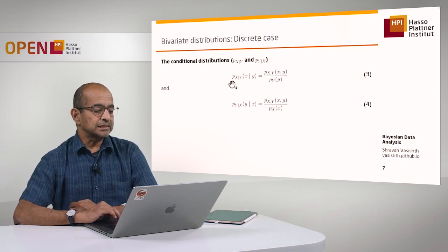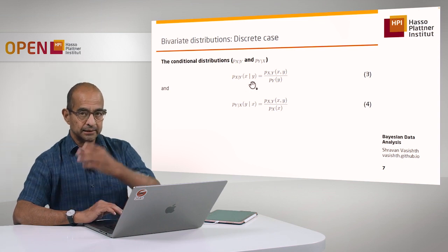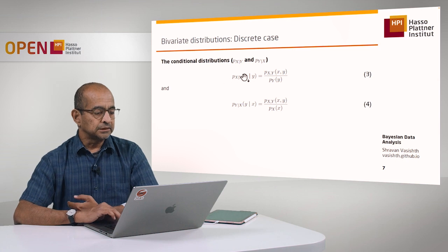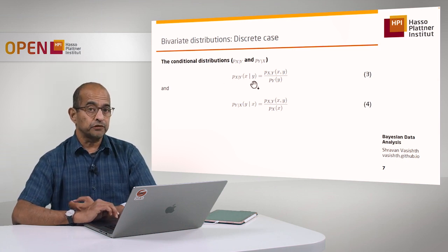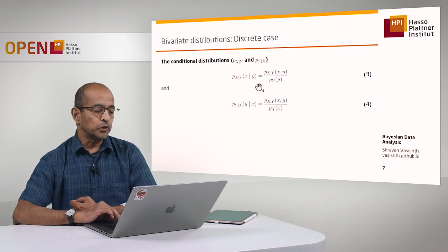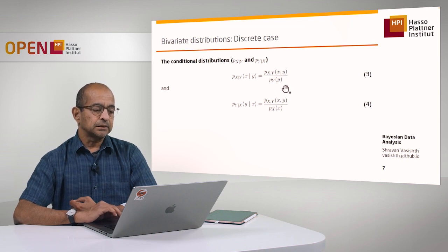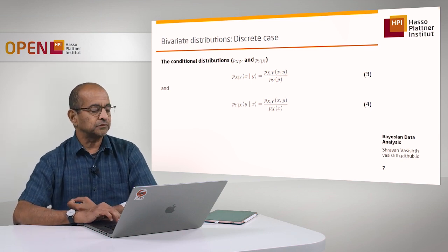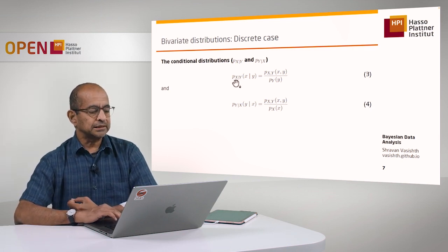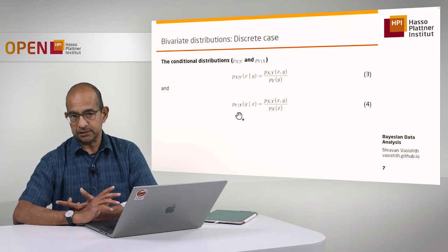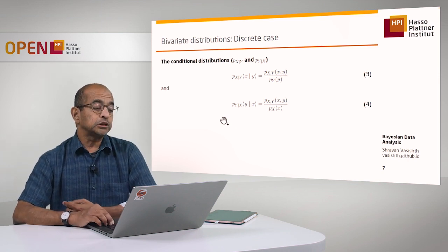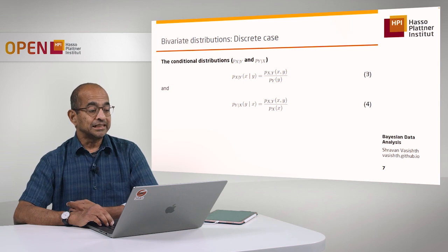The definition states that the conditional probability of x given y — where that vertical bar is a conditionality statement — is the distribution of x given some particular value of y, which equals the joint distribution of x and y divided by the marginal distribution of that particular value of y. Similarly, you can reverse the x's and y's to get the conditional distribution of y given x.